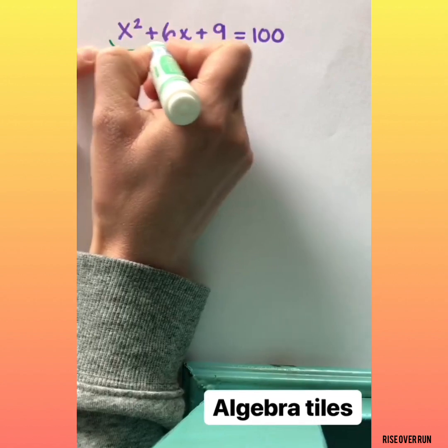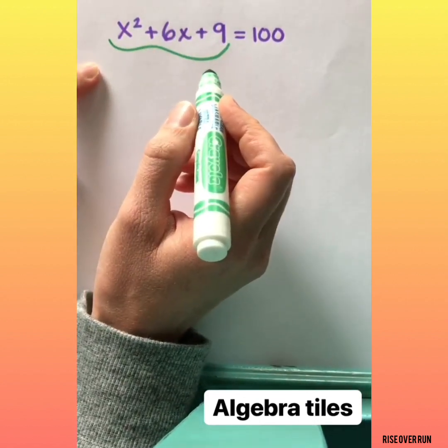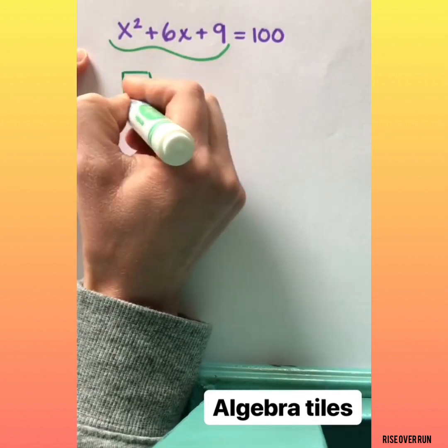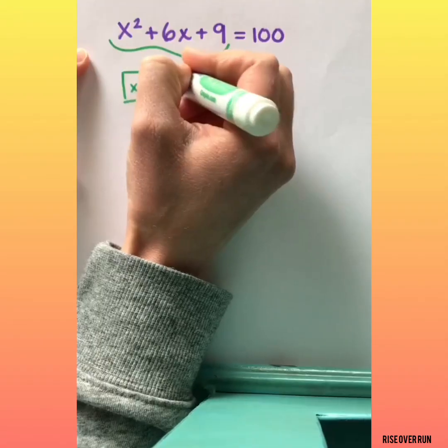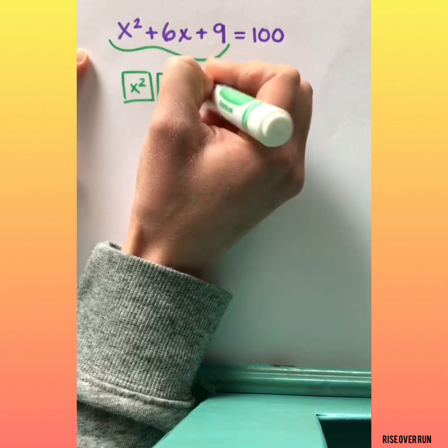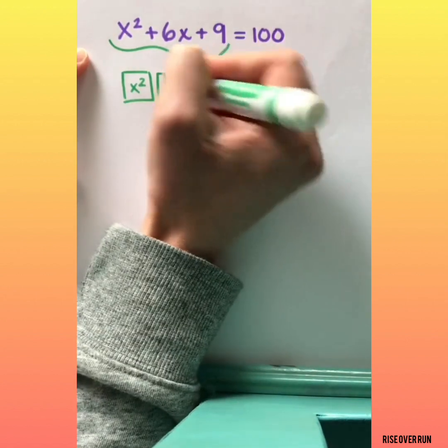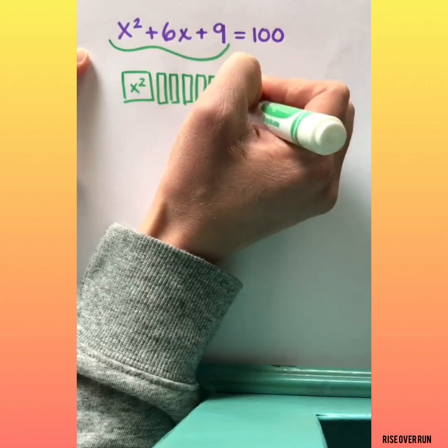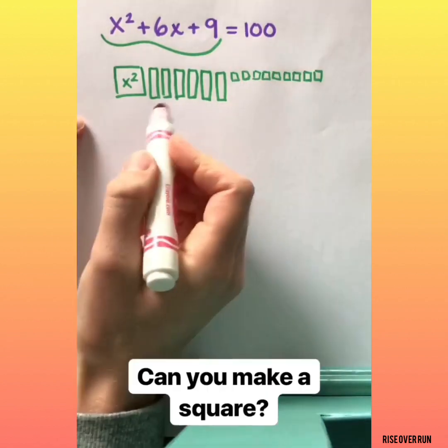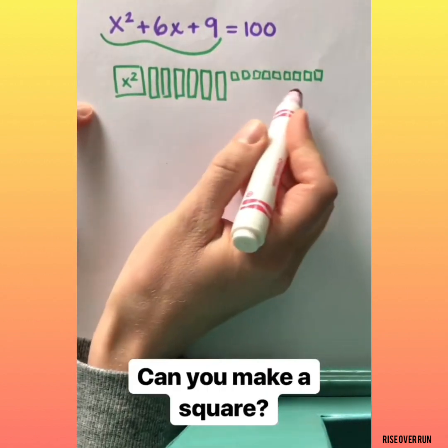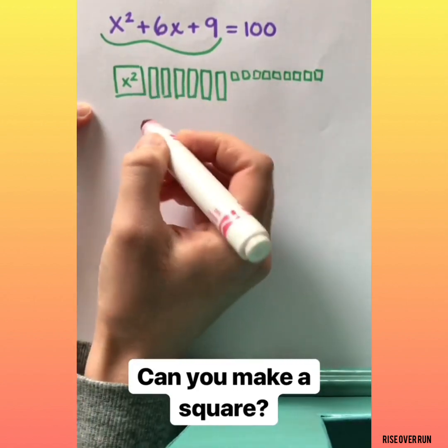Let's take what's on the left side here and visualize what this would look like if we were using algebra tiles. We have x squared, and then we have 6 bars that represent x, and then we have 9 units. Alright, so the whole idea of completing the square is to arrange what you have here into a square. So let's see if we can rearrange these and make a perfect square.